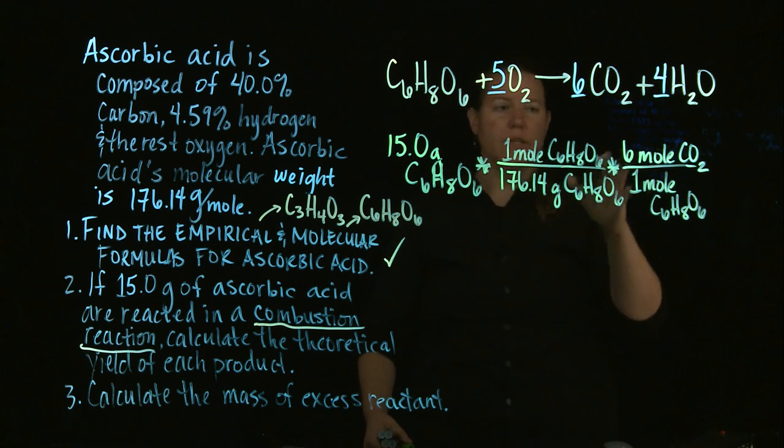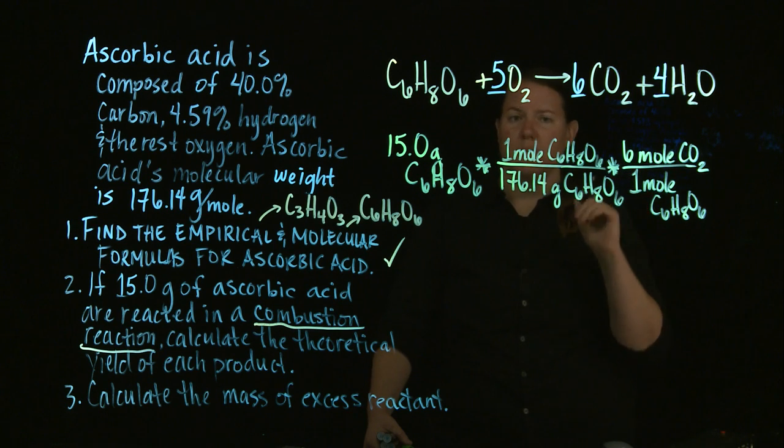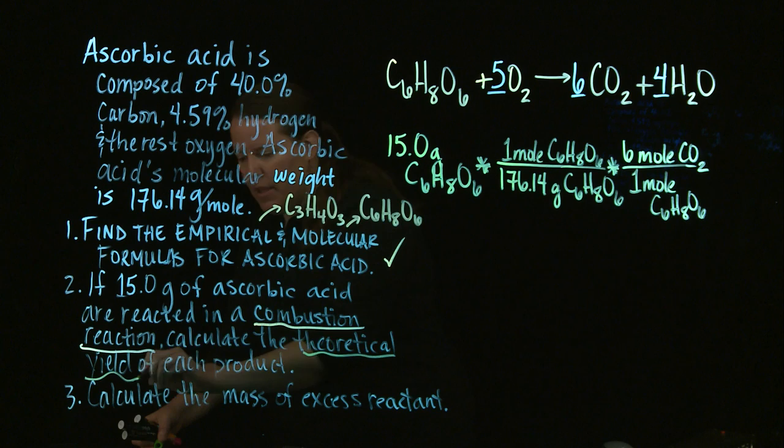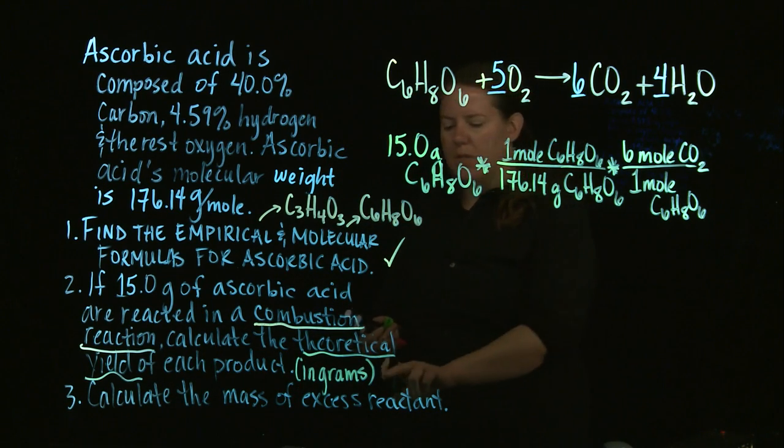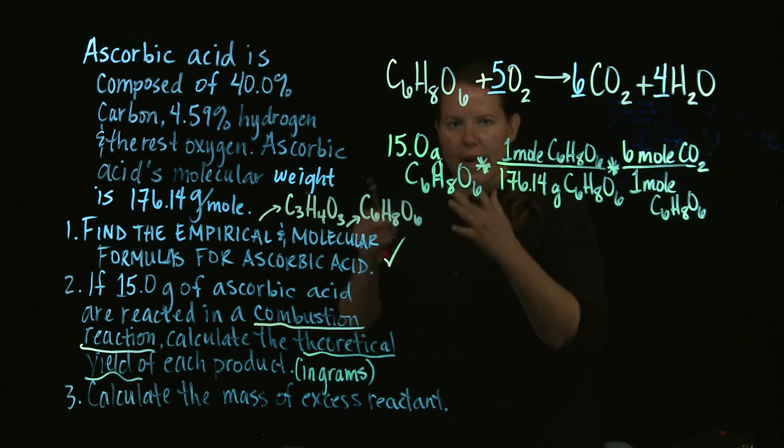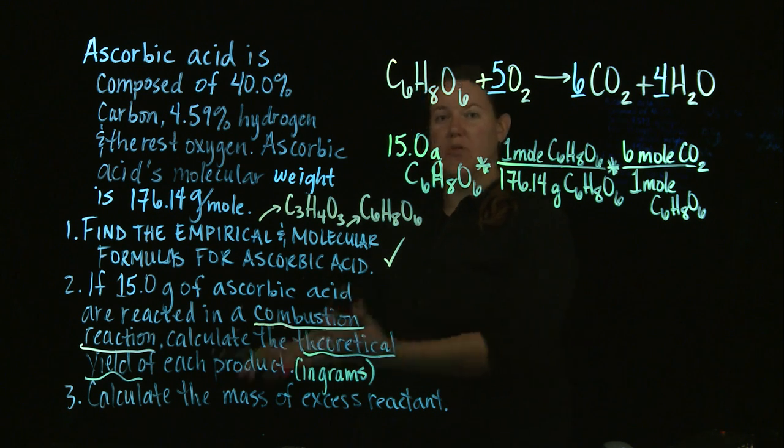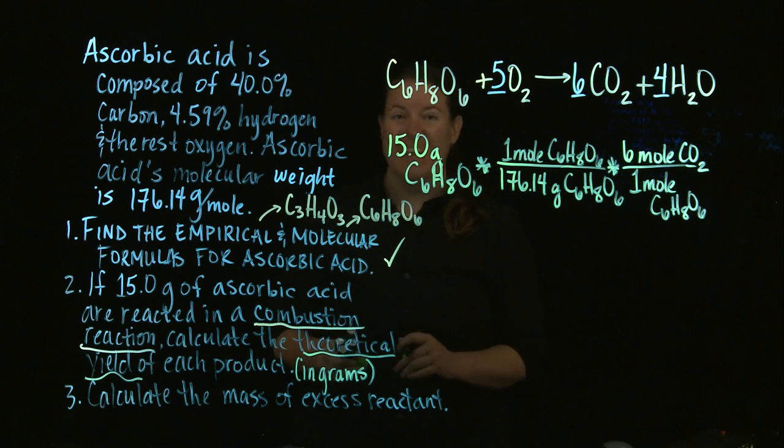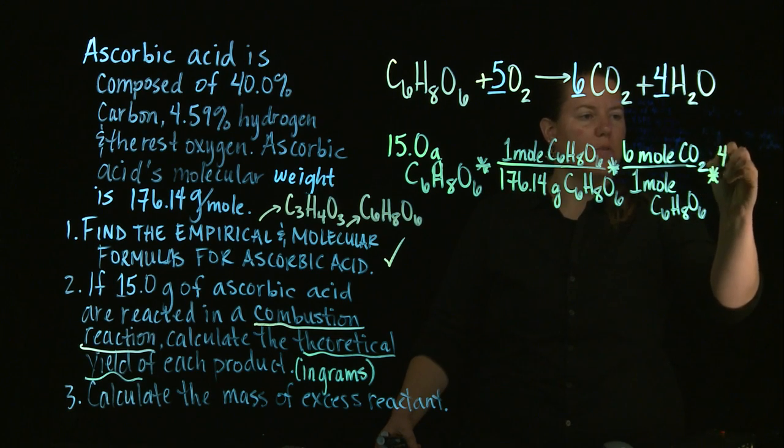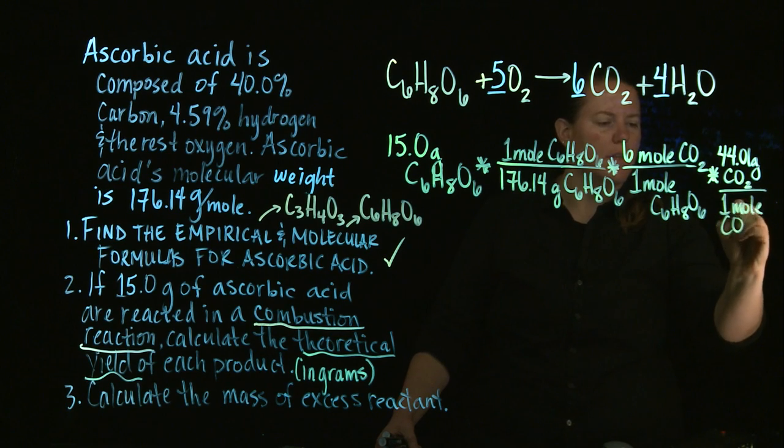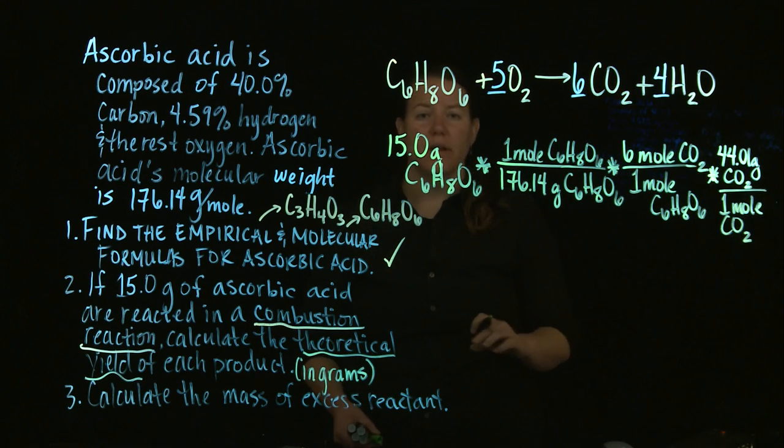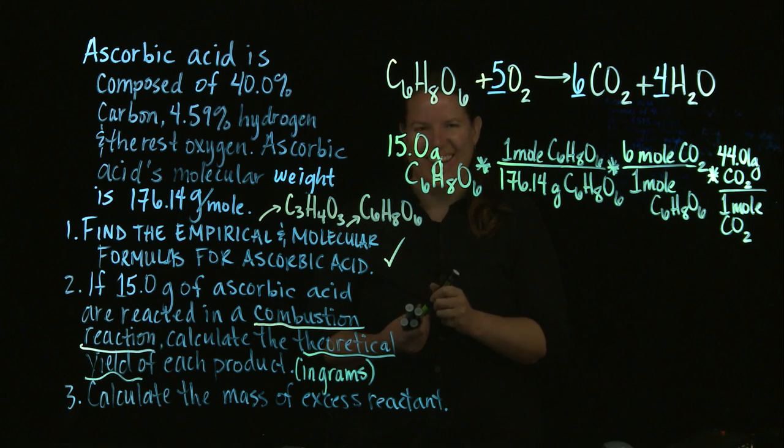And now, if I wanted this in moles, I'd be done. I probably didn't, because a theoretical yield is almost always in grams. Why is it almost always in grams? In terms of, at least, beginning stoichiometry that we do. The reason why is because the scale, when we're comparing an actual yield to a theoretical yield, we're really measuring something on a scale for the actual yield. And that's in grams. So that's why we usually do these in grams. I would need the molar mass of carbon dioxide.